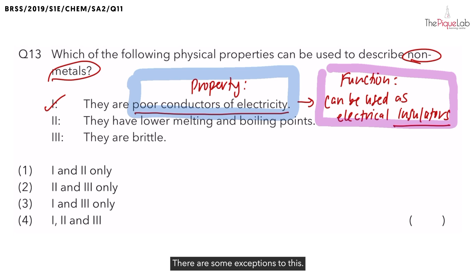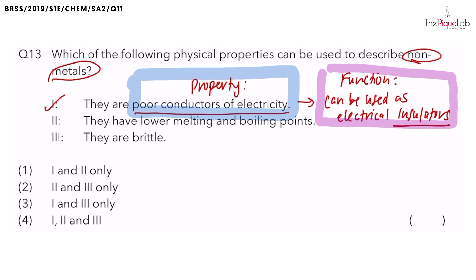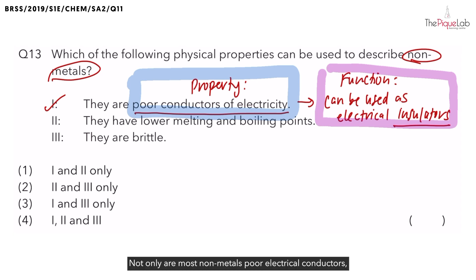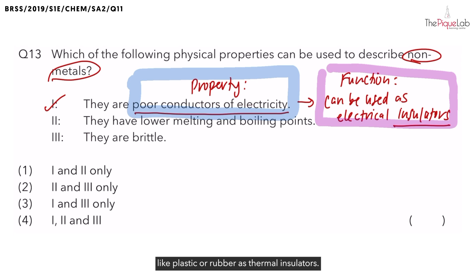There are some exceptions to this. What are some of the non-metals that are good electrical conductors? An example is graphite. Not only are most non-metals poor electrical conductors, but they are poor thermal conductors as well — they do not allow heat energy to pass through them easily. Thus, we can use non-metals like plastic or rubber as thermal insulators.